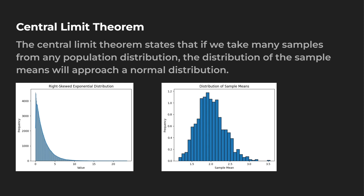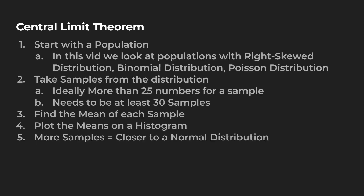We do have one outlier at 3.5, but this looks a lot more like a normal distribution — not perfectly symmetrical, but pretty close. Here's how we do it: start with the population. We're going to look at a right-skewed distribution, a binomial distribution, and a Poisson distribution. Then take samples — ideally more than 25 numbers per sample and at least 30 or more samples. Find the means of each sample, plot the means on a histogram, and more samples equals closer to a normal distribution. With that background, we're ready to start coding in Python.